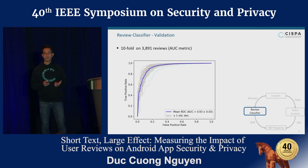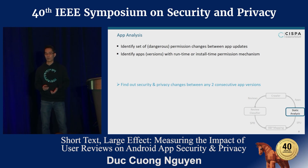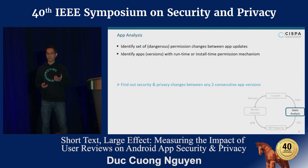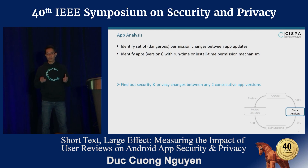Now we have a review classifier with an AUC of 0.93. The next step is to detect whether a given update is security and privacy-related. We again focus on what is visible to end-users — specifically, the dangerous permission changes between app updates. Furthermore, we want to know whether the runtime permission mechanism has an impact on user perception regarding permission requests of Android applications. Therefore, we identify whether an app version uses runtime or install-time permission mechanism and correlate this with the number of SPR. The goal is to find security and privacy changes between consecutive app versions.